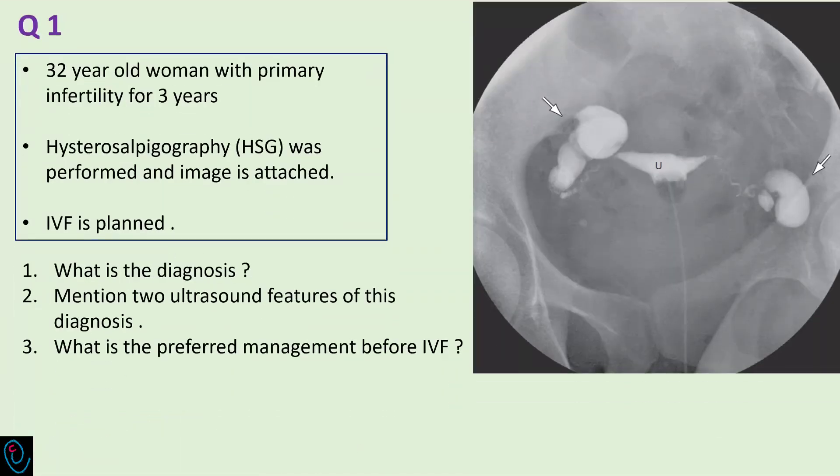Question number one: a 32-year-old woman with primary infertility for three years. Hysterosalpingography was performed and the image is attached. IVF is planned. What is the likely diagnosis? Mention two ultrasound features of this diagnosis. And what is the preferred treatment before IVF?